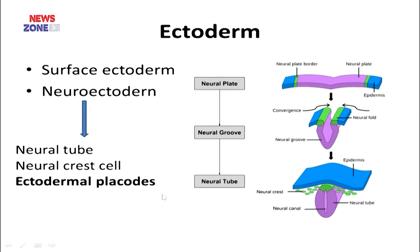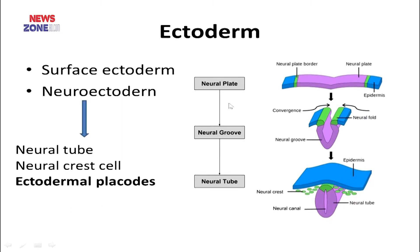We start with the neural tube. Before we start, we want to describe which germ layer is responsible — ectoderm. The ectoderm first differentiates into two parts: the surface ectoderm and neuroectoderm. The neuroectoderm also differentiates into three parts: neural tube, neural crest, and also the ectodermal placodes. Our focus is on the neural tube.